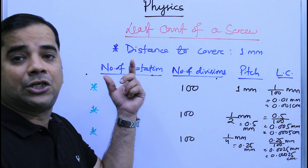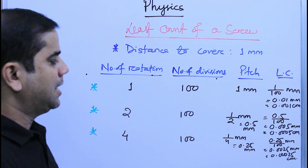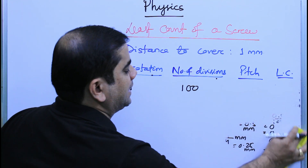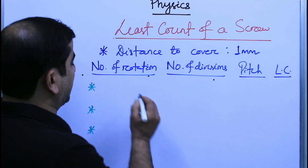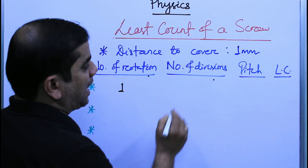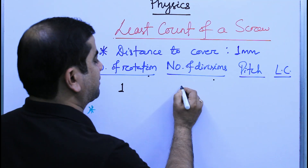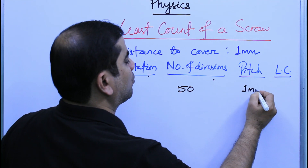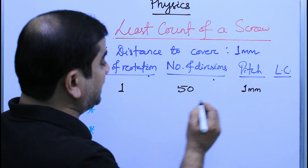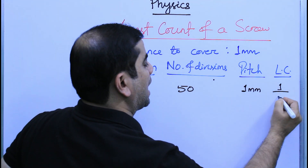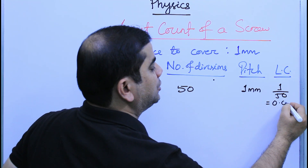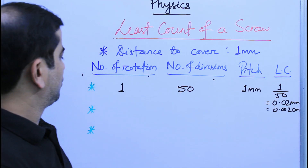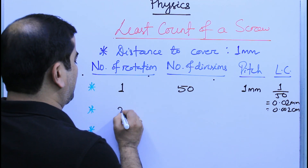Now let us find the least count when the number of divisions is 50. If the number of rotations is 1 and the number of divisions on the circular scale is 50, the pitch remains 1 millimeter. The least count is 1 divided by 50, which equals 0.02 millimeter or 0.002 centimeter.